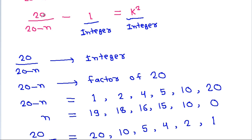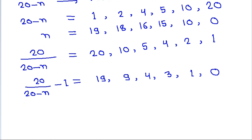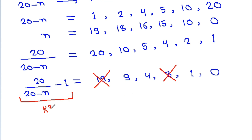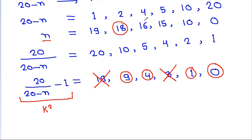We need 20/(20 minus n) minus 1 equal to k squared. Now 19 is not a perfect square and 3 is not a perfect square. That means k squared can be 9, 4, 1, and 0. So n can be 18, 16, 10, and 0.